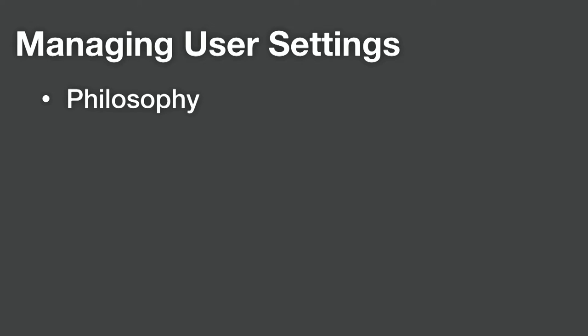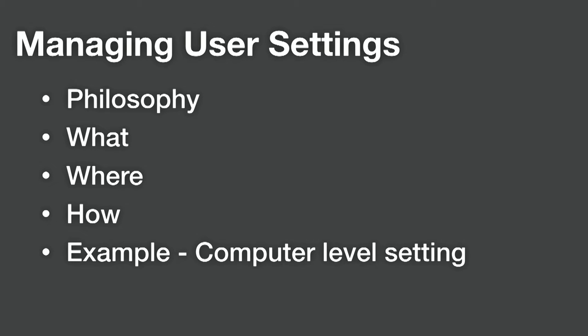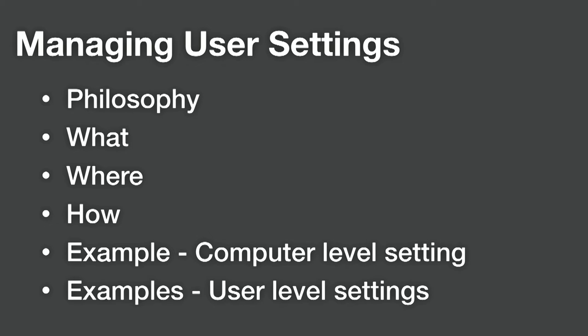I'm going to talk a little bit about the philosophy of managing settings, why we do things, what the settings are, where they live, how we might do these things, and then we're going to talk about some examples. I mentioned that I'm going to cheat — I am going to talk about computer level settings, and I have a couple examples of user level settings. The examples I'm going to use are directed toward the Center for Internet Security benchmarks and remediation, because those have been pretty popular lately. NIST also released some benchmarks that are pretty close, covering how to detect risk on your Mac and remediate that risk. All the code's out on GitHub.